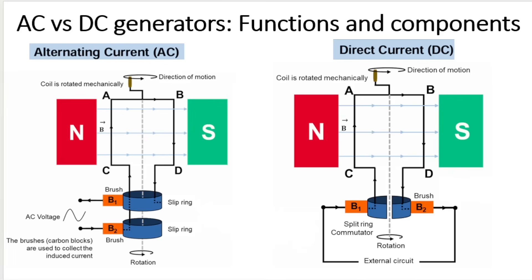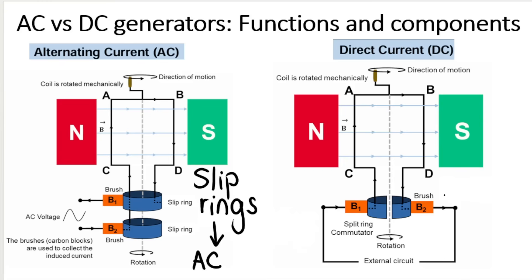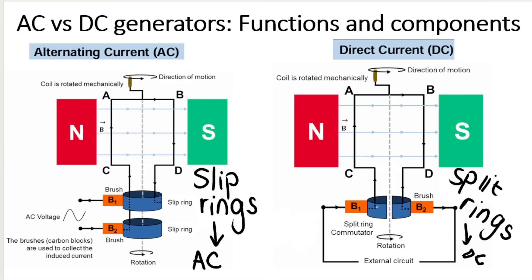The visible difference between an AC generator versus a DC generator is the use of either slip rings — that would create an AC generator — or a split ring commutator, sometimes just referred to as split rings, but split ring commutator is better — that would be a DC generator. You can see here on screen what they look like. Slip rings slip onto either end of the coil, and a split ring commutator is one thing that is split down the middle.